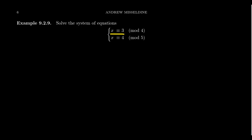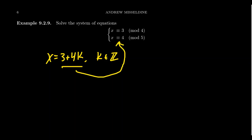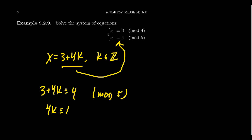The Chinese Remainder Theorem guarantees a solution exists; now let's find the procedure. Since x ≡ 3 (mod 4), there exists an integer k such that x = 3 + 4k. Substituting into the second congruence: 3 + 4k ≡ 4 (mod 5). Subtracting 3 from both sides gives 4k ≡ 1 (mod 5). Since gcd(4,5)=1, 4 has a multiplicative inverse mod 5 — it turns out to be 4 itself — and multiplying both sides by 4 gives k ≡ 4 (mod 5), since 4×4=16≡1 (mod 5).